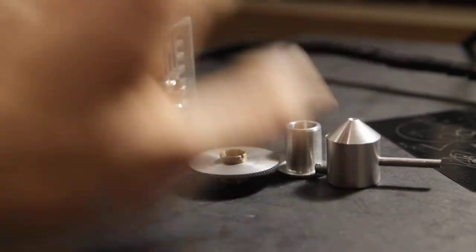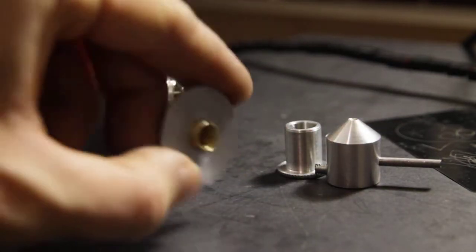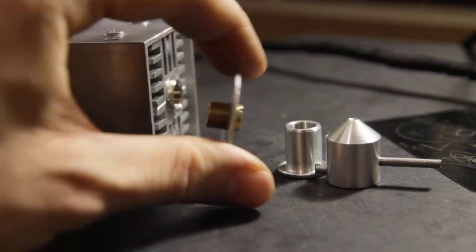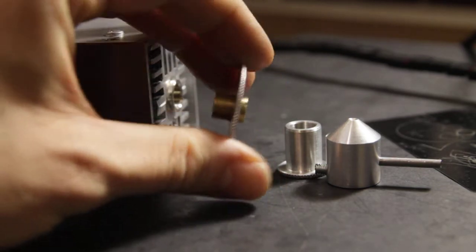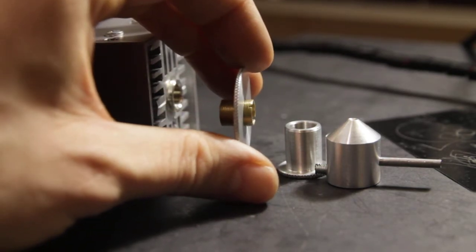The bigger focusing ring should be screwed like this, maybe two-thirds or three-fourths of the entire laser lens.